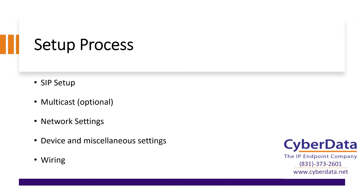There are a couple different parts to configure as you go through the setup process. The most important, given its name, is the SIP setup. Then there's the multicast portion, which is not required but is used in many instances, especially when using the Paging Adapter with other products like the Paging Server, a multicast microphone, or call buttons. There are also the network settings and device and miscellaneous settings, plus the actual wiring up to an analog amplifier.